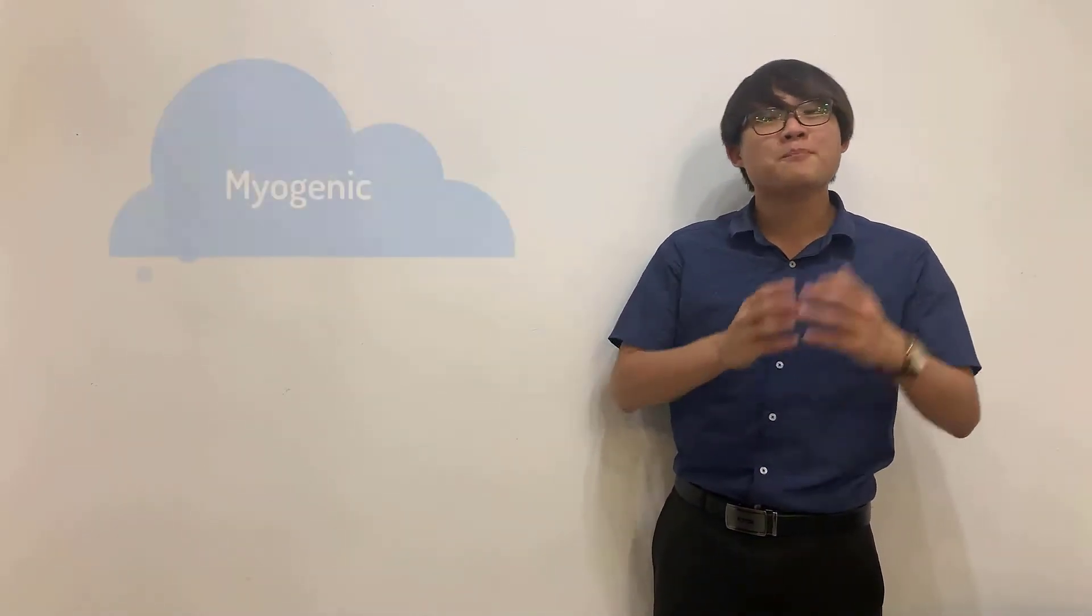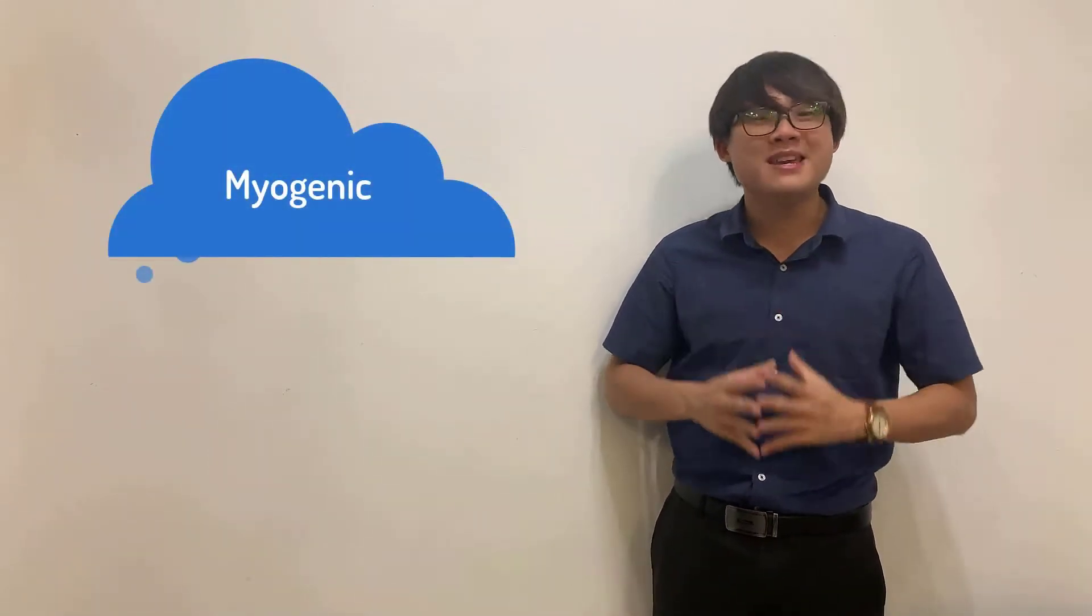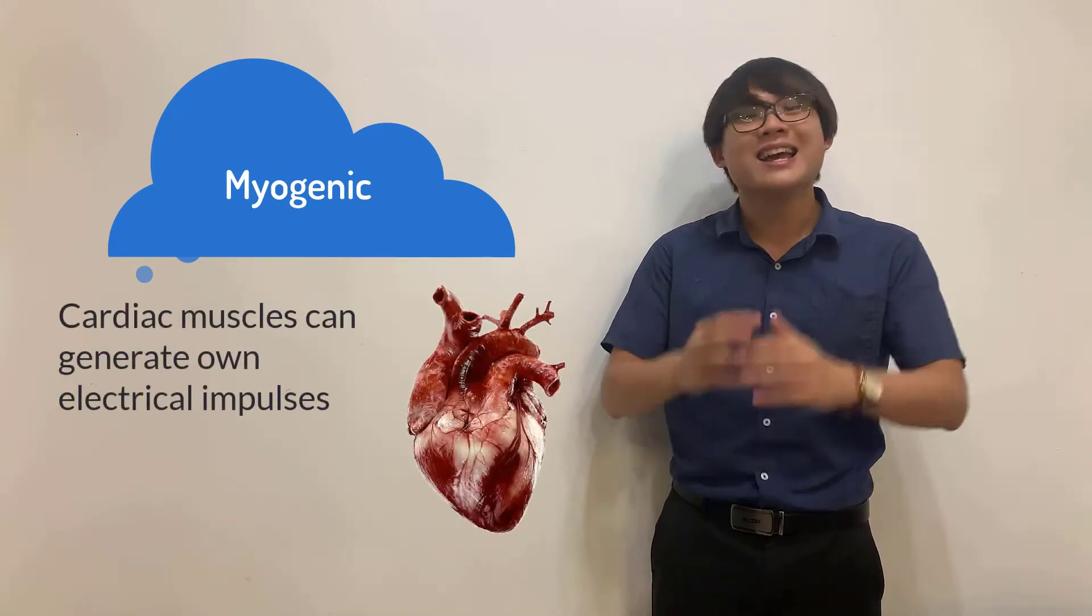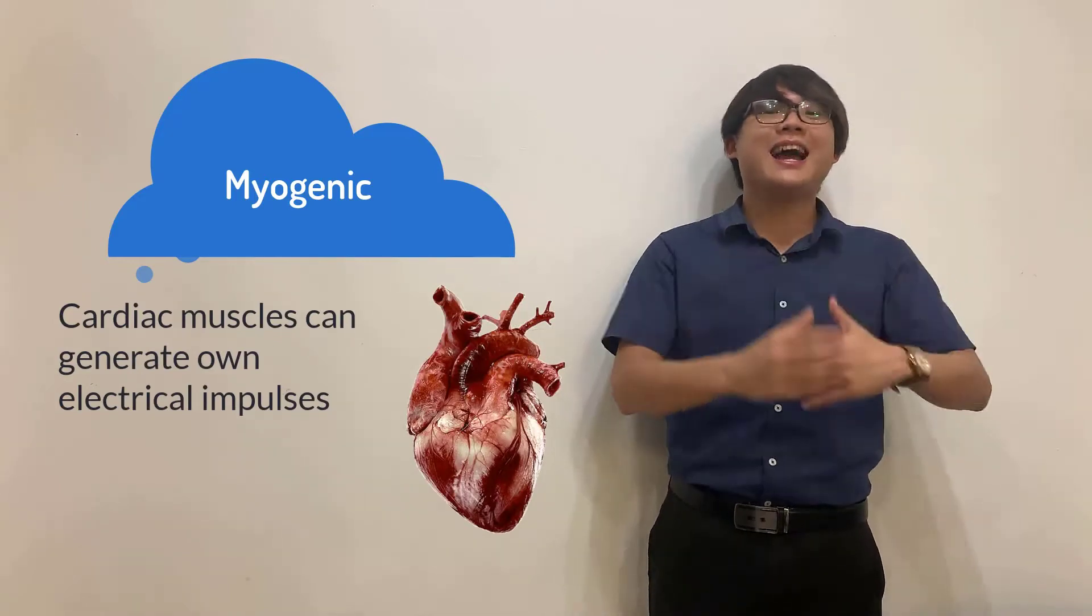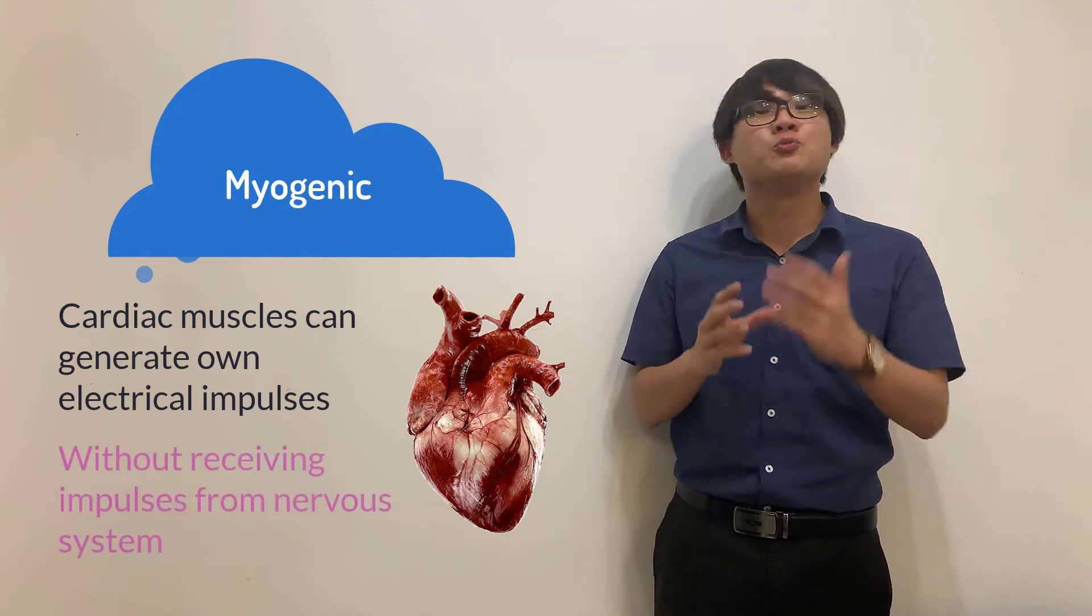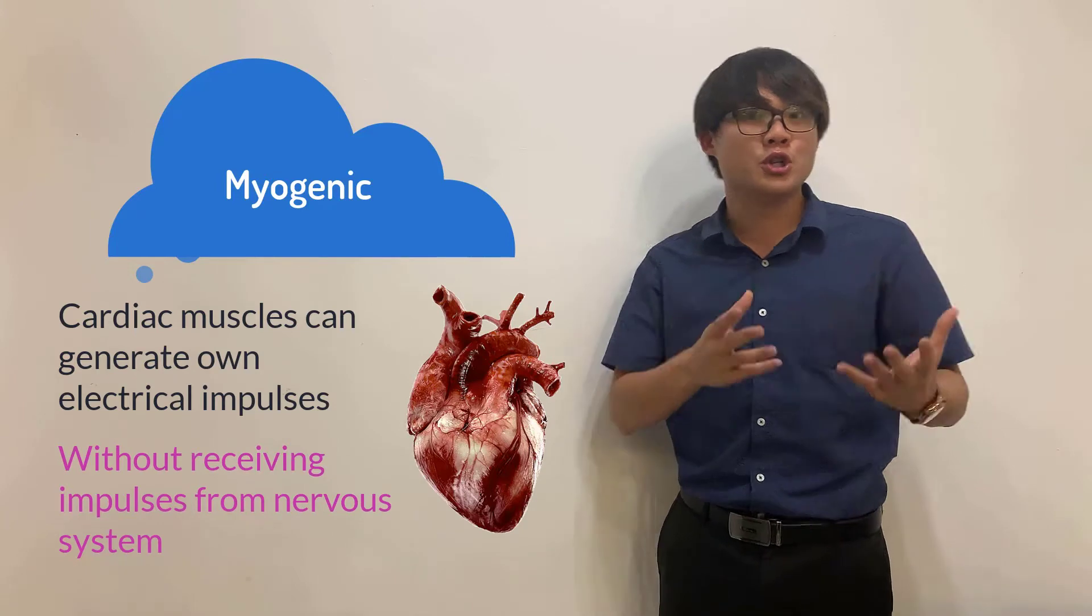You have to understand that cardiac muscle has a very important characteristic, which is called myogenic. Myogenic means, let's just break down the word. The word myo actually means muscle. Genic means generate. It means that actually the cardiac muscles can generate their own electrical impulses and they do not have to receive nerve impulses from the central nervous system in order for them to contract.